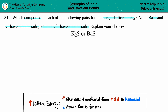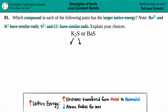Lattice energy is the amount of energy needed to break the ionic compound and form its ions. K₂S breaks down into potassium (K) and sulfur (S). Looking at the periodic table: potassium is in group 1, so it's a +1 charge; sulfur is in group 6A (or 16), so it's a -2 charge. For BaS, barium and sulfur break down into Ba and S — barium is in group 2, so it's +2, and sulfur is -2.